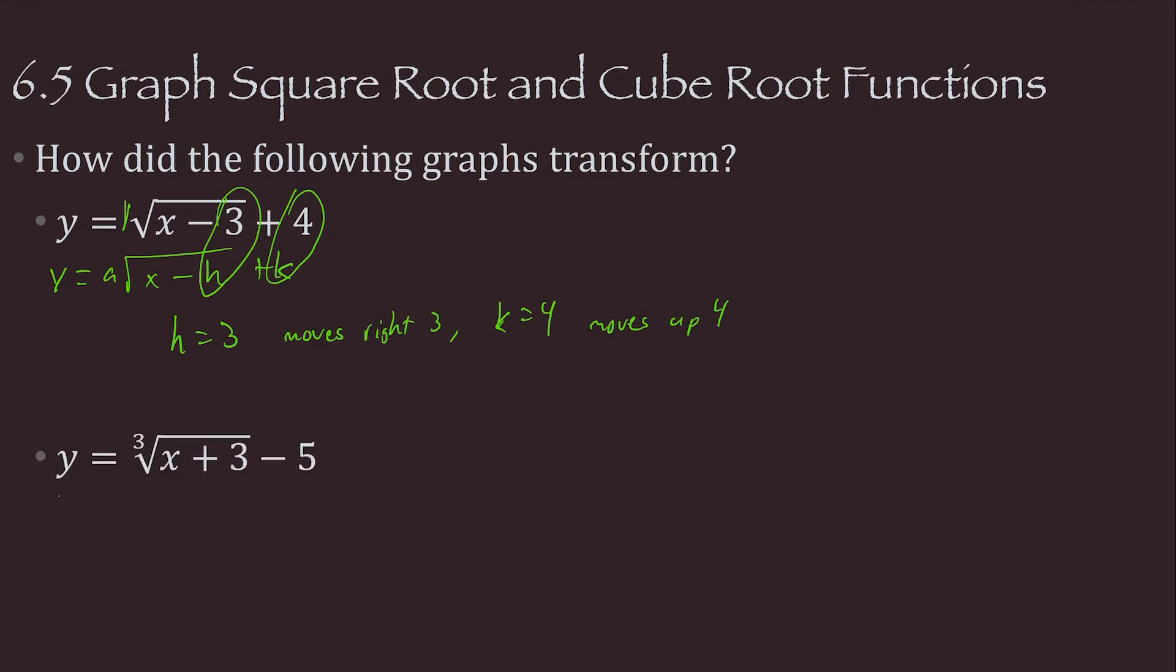Let's try another one. Again, it's y equals A cube root of x minus H plus K. Well, looking at this, H is 3, but it's a negative. So this is really x minus a negative 3. So H is negative 3, which means instead of to the right, it's going to move left 3. And then K is negative 5, so instead of moving up 5, it's going to move down 5.